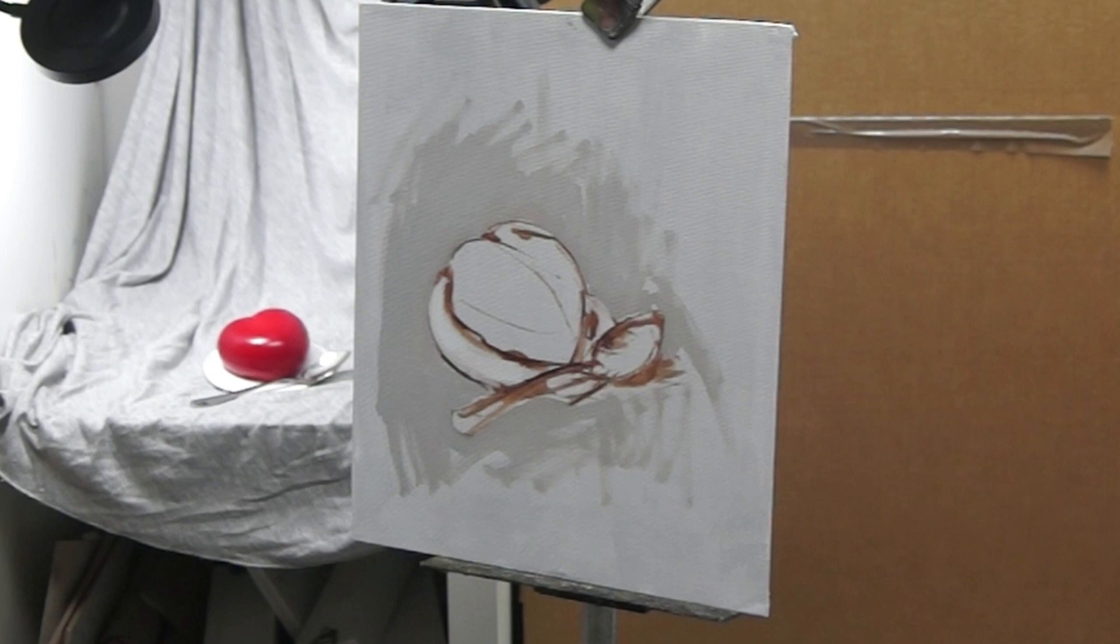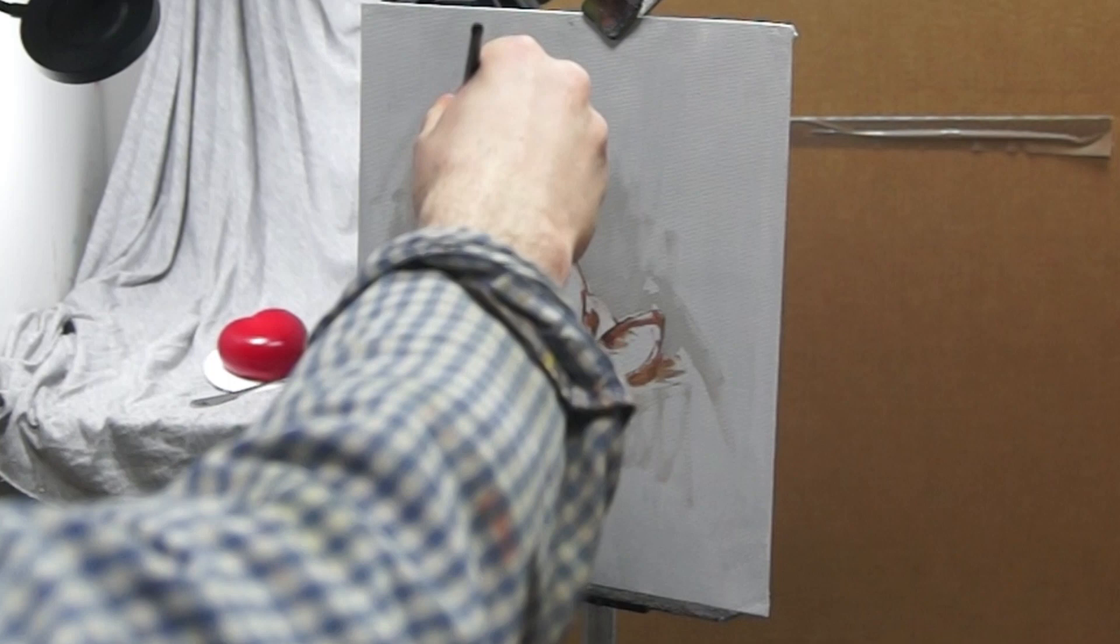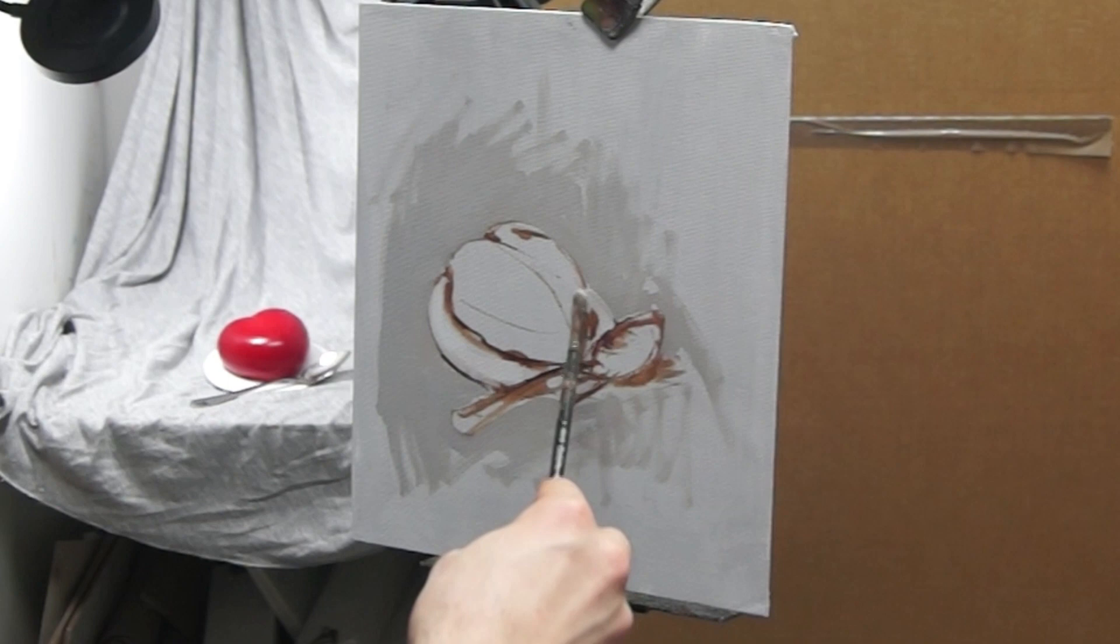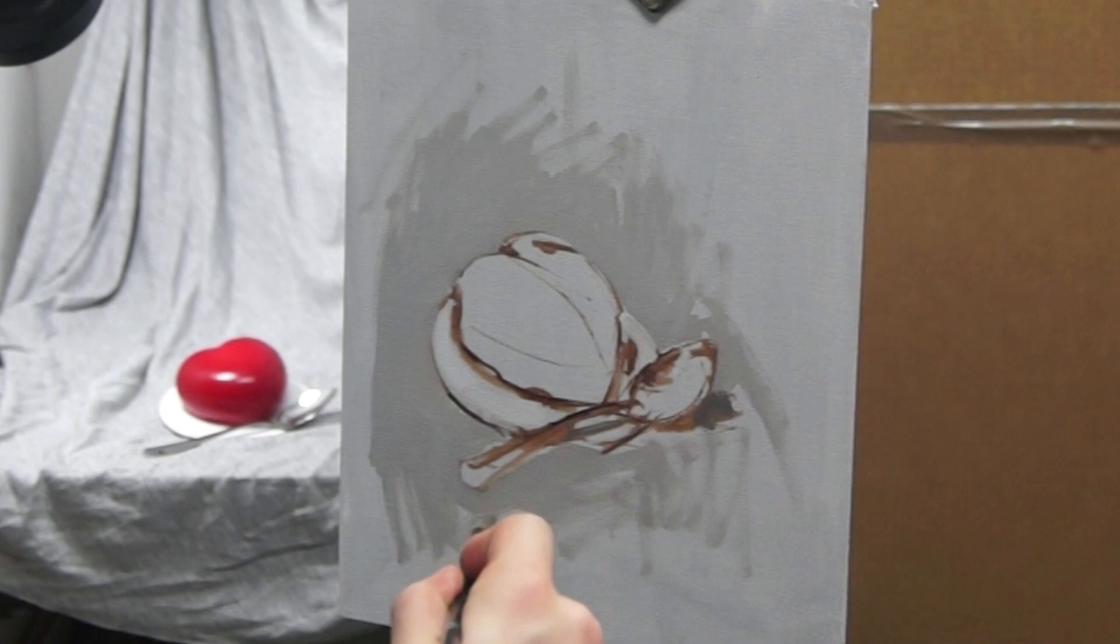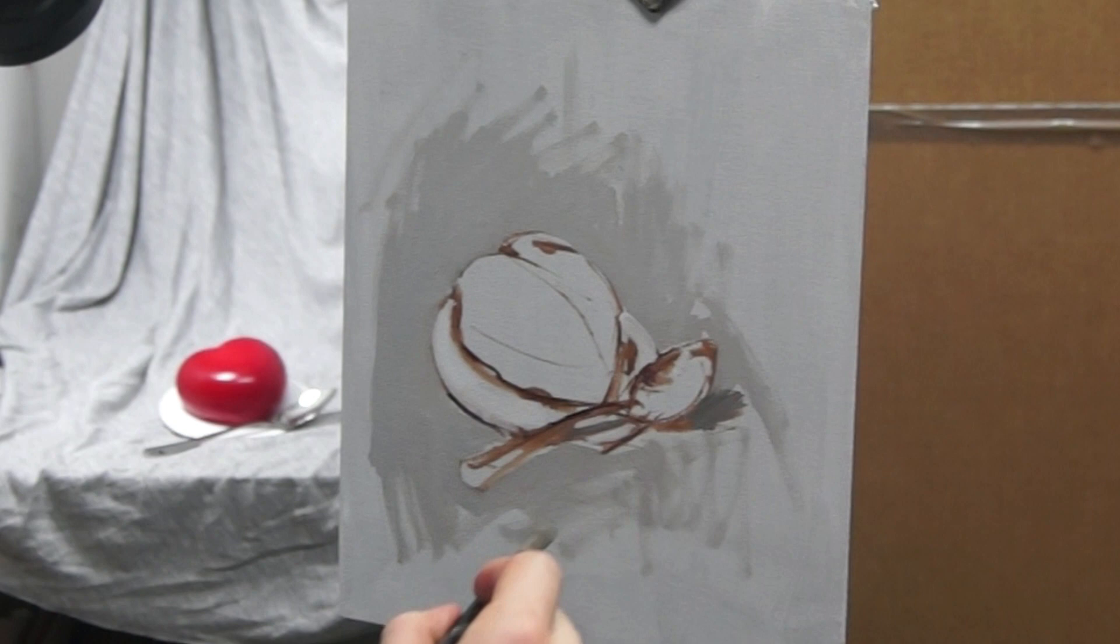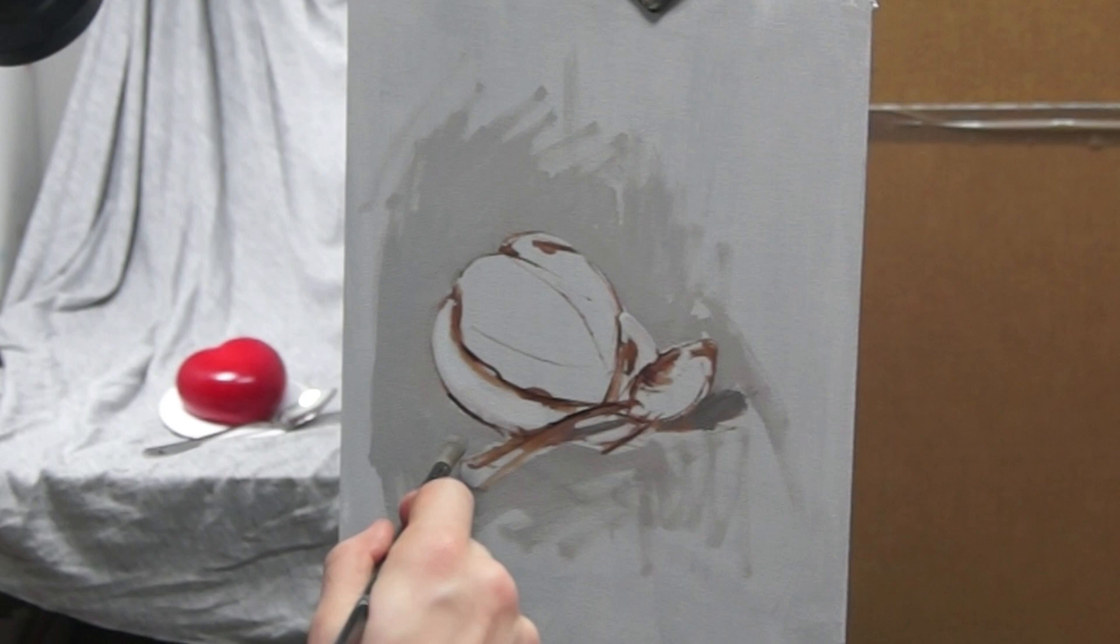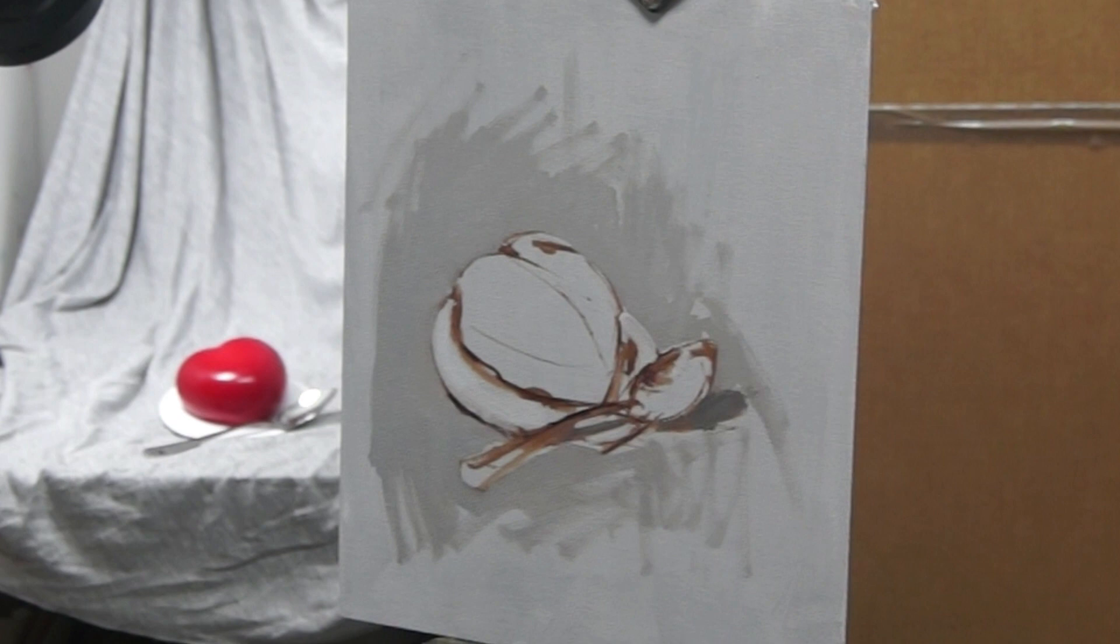Once I have this down I can then compare other value relationships within the painting to this. If something looks far too dark in relation to this light section then I can make it lighter, or when I mix the color and it goes down on my painting and when I compare it to this section it looks too light I can then make it a bit darker. So it's nice to have a value which I can consider a true value to relate other values to, as no value and no color exists in isolation.